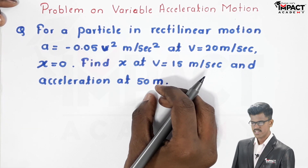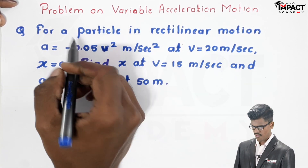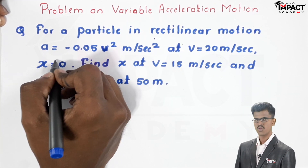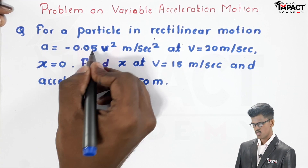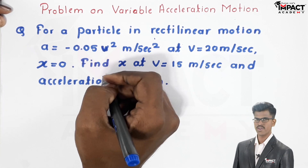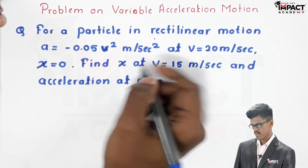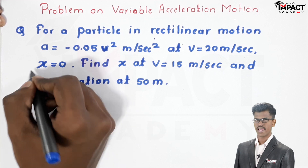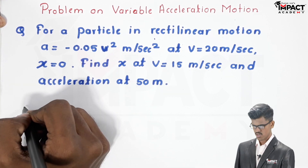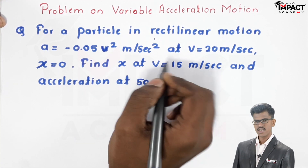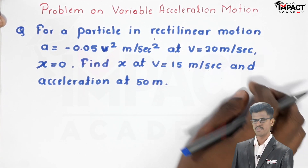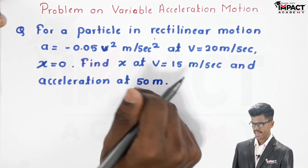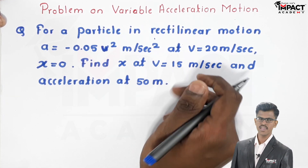Let's see the question first. For a particle in rectilinear motion, a is equal to minus 0.05 v squared meter per second square. At v is equal to 20 meter per second, x is equal to 0. Find x at v is equal to 15 meter per second, and acceleration at 50 meters.